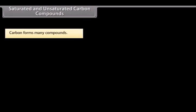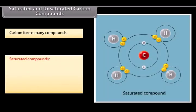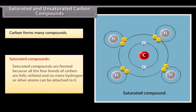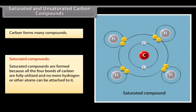Saturated and unsaturated carbon compounds. Carbon forms many compounds. The two main types are saturated compounds and unsaturated compounds. Saturated compounds: The carbon and hydrogen compounds where the adjacent carbon atoms contain only one single covalent bond are known as saturated hydrocarbons. The reason for the formation of saturated hydrocarbons is because all the four bonds of carbon are fully utilized and no more hydrogen or other atoms can be attached to it. These are known as alkanes.